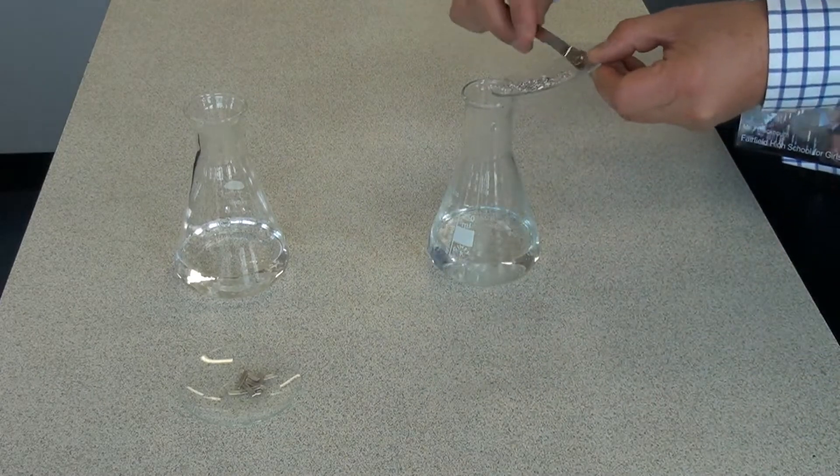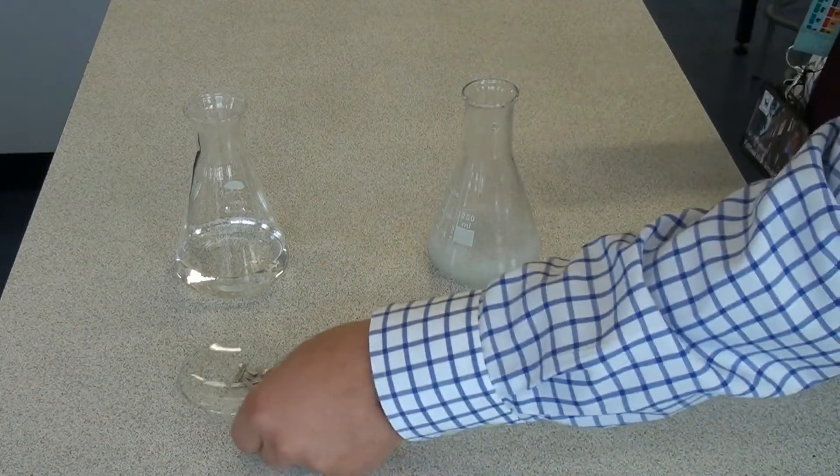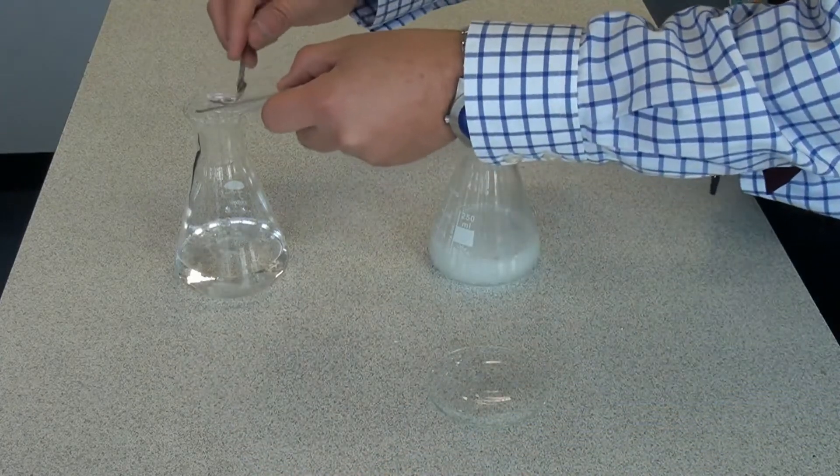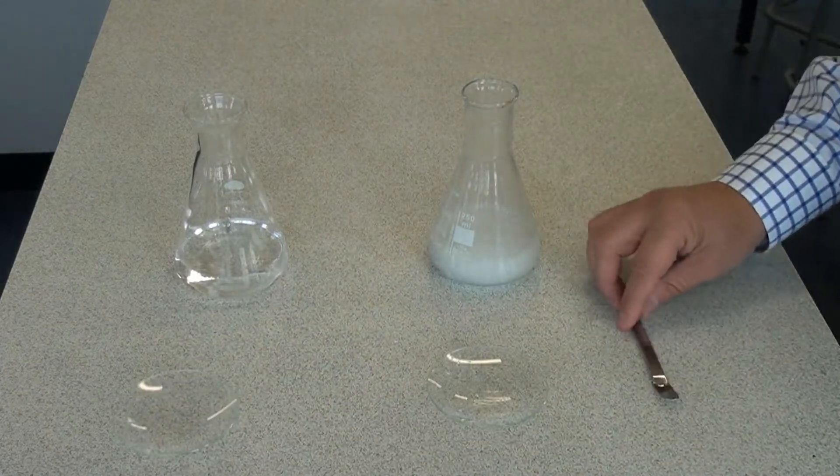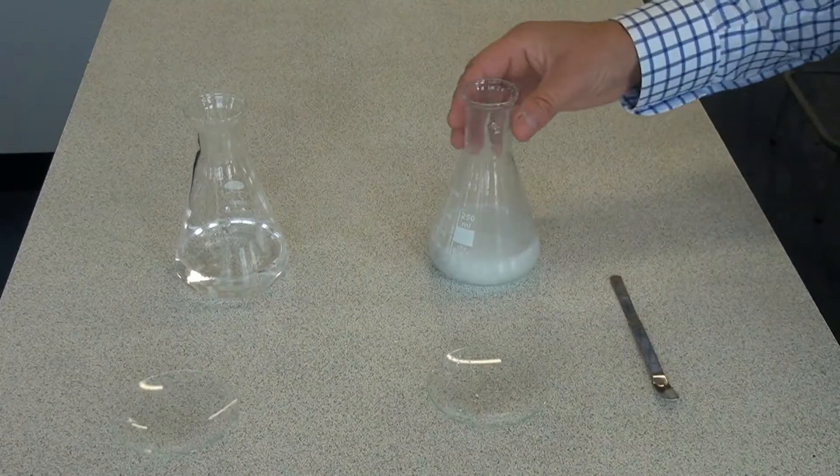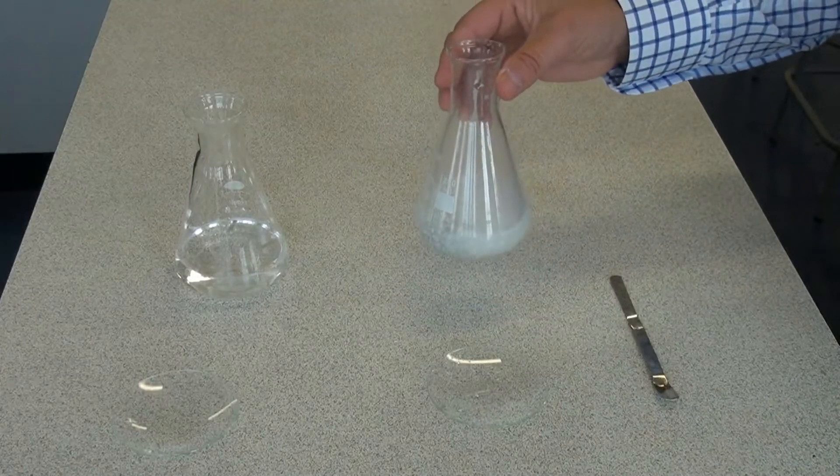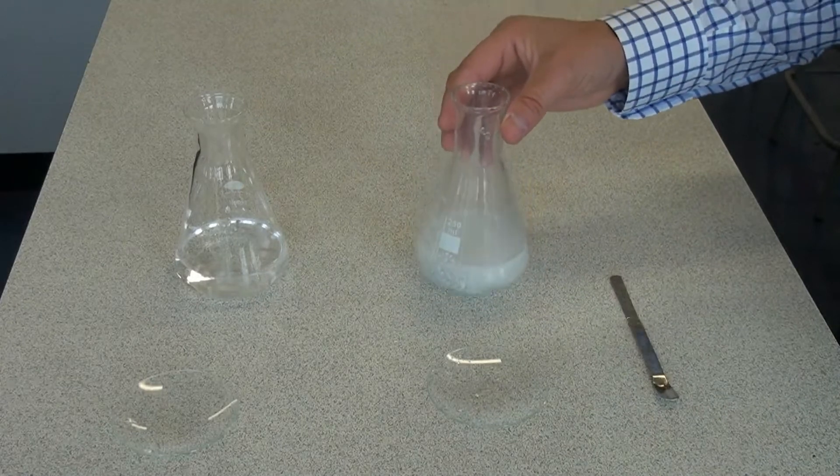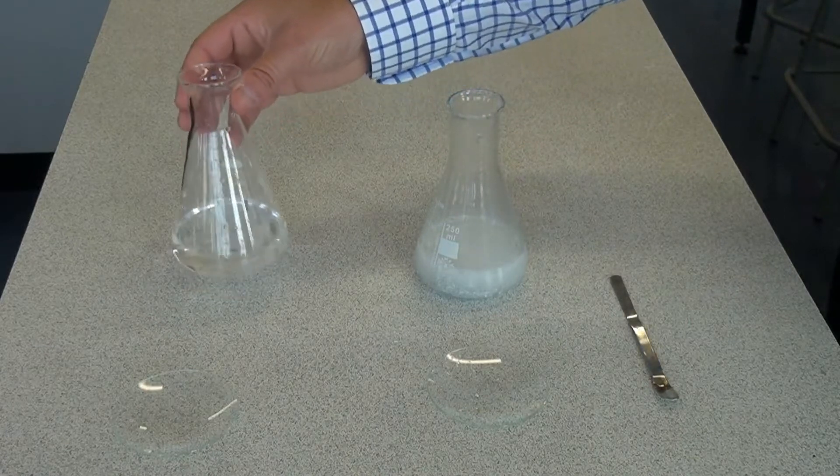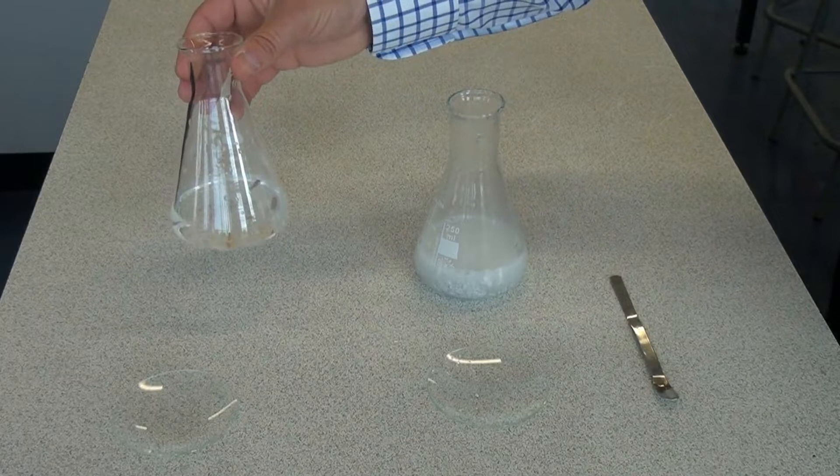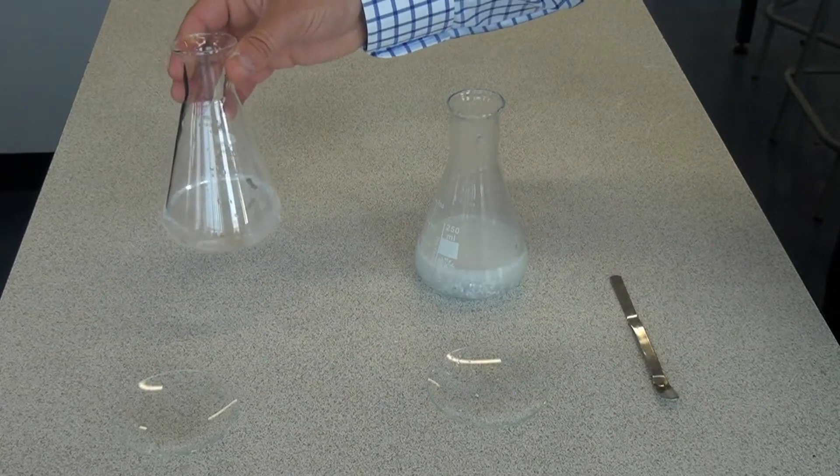So the small pieces going in first of all, straight away we are getting quite a vigorous reaction there and then the larger pieces. So it's quite obvious that the small pieces are reacting much much quicker so we would say these have a higher rate of reaction. Whereas the larger pieces are reacting more slowly, we can tell there's less fizzing and less bubbling, so we would say that has a lower rate of reaction.